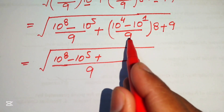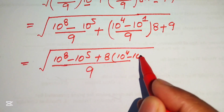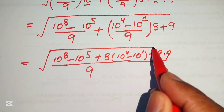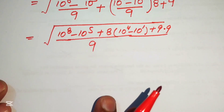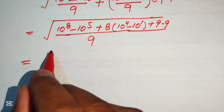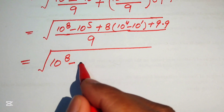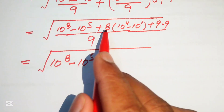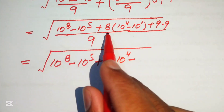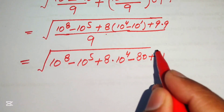The nines cancel out and we get eight times ten to the power four minus ten to the power one, and nine times nine becomes 81. After that we multiply this eight on both terms: it is written as ten raised to power eight minus ten raised to power five, plus eight multiplied by ten raised to power four, minus eight times ten equals eighty, plus nine times nine becomes 81. All of this is divided by nine and is our whole square root.